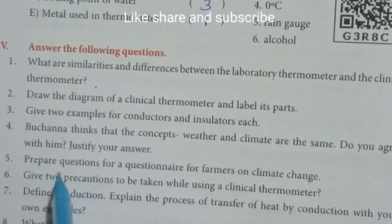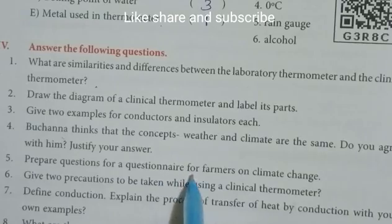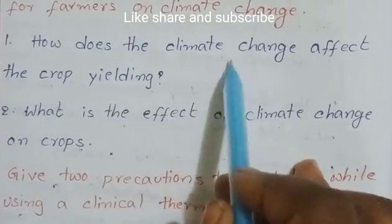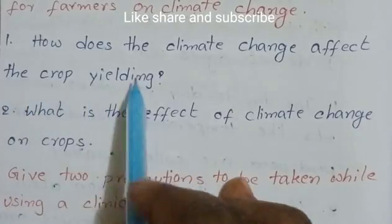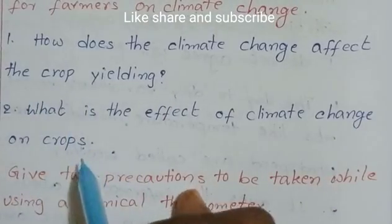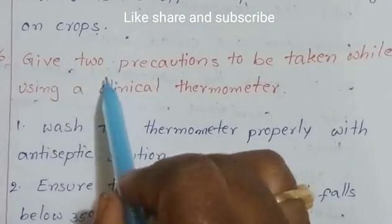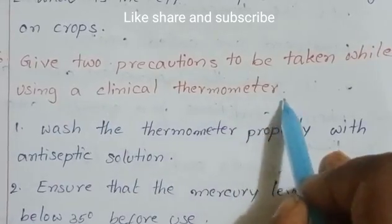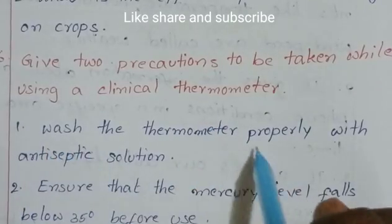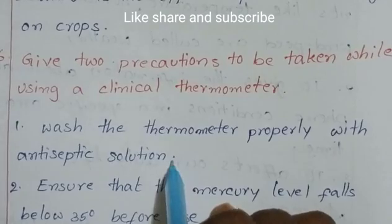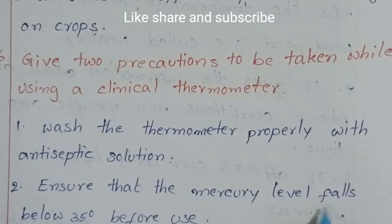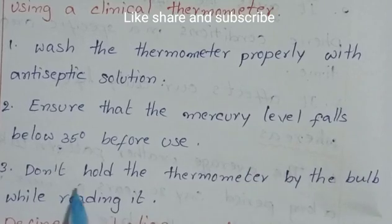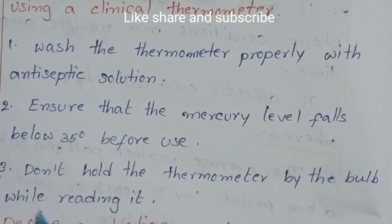Fifth question: prepare questions for a questionnaire for farmers on climate change — how does climate change affect crop yielding? What is the effect of climate change on crops? Give two precautions to be taken while using a clinical thermometer: wash the thermometer properly with antiseptic solution, and ensure that the mercury level falls below 35 degrees before use. Do not hold the thermometer by the bulb while reading it.